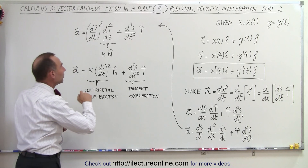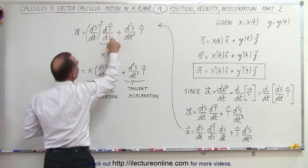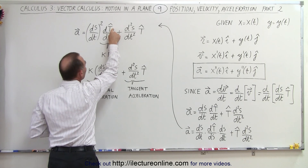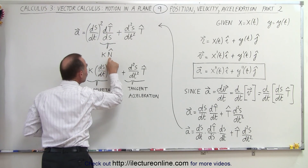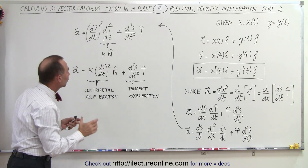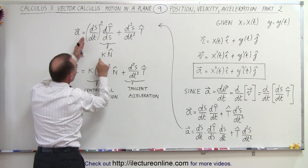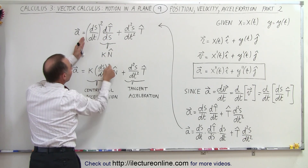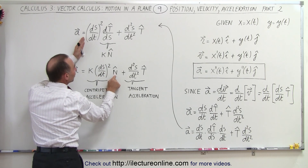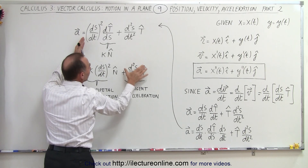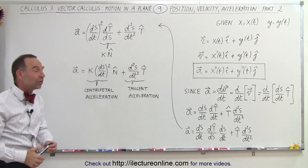Now we have to remember from a few videos back that dT/ds, the derivative of the tangent unit vector with respect to s, can be expressed as the curvature κ times the normal unit vector N̂. If we replace dT/ds by that, we can write this term as κ times (ds/dt) squared times the normal unit vector N̂, plus the second derivative of s with respect to t times the tangent unit vector.